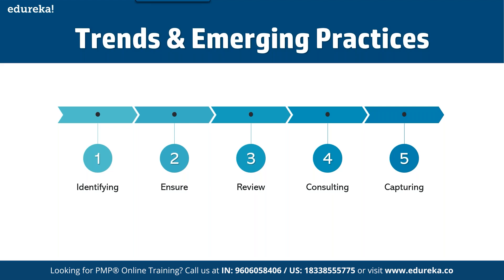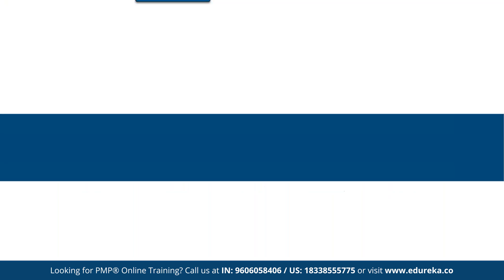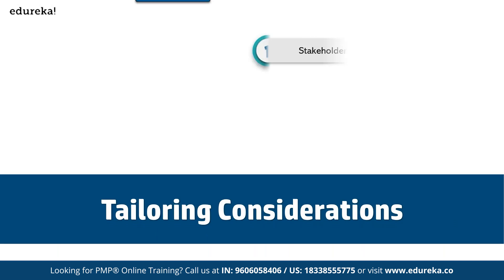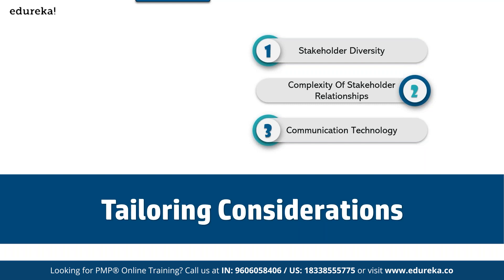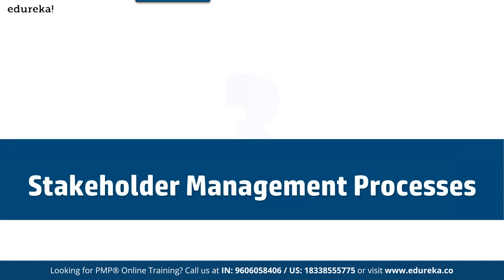Fifth is capturing — capturing the value of effective stakeholder management. Under tailoring considerations, it's a three-step process. First is stakeholder diversity, where you have people from different domains who bring value to the table. Next is complexity of stakeholder relationships, where people from different domains help resolve complex problems and use cases. Last is communication technology, where many different technologies are used for effective communication.